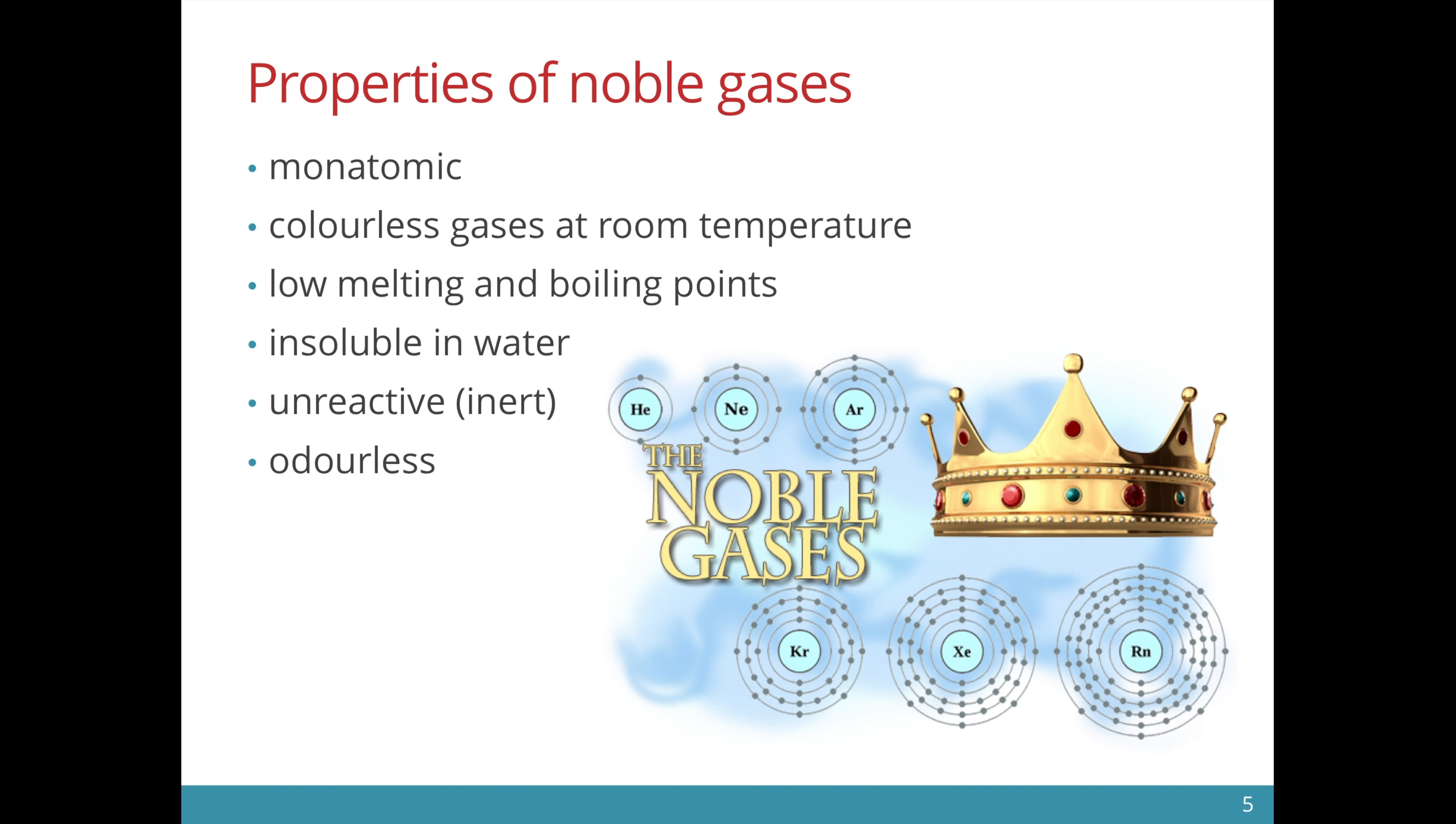Here are some properties of noble gases. They are monatomic, meaning they exist as individual atoms, not bonded to other elements. They are colorless gases at room temperature because of their low melting and boiling points. This means that the forces of attraction between these atoms are very weak.